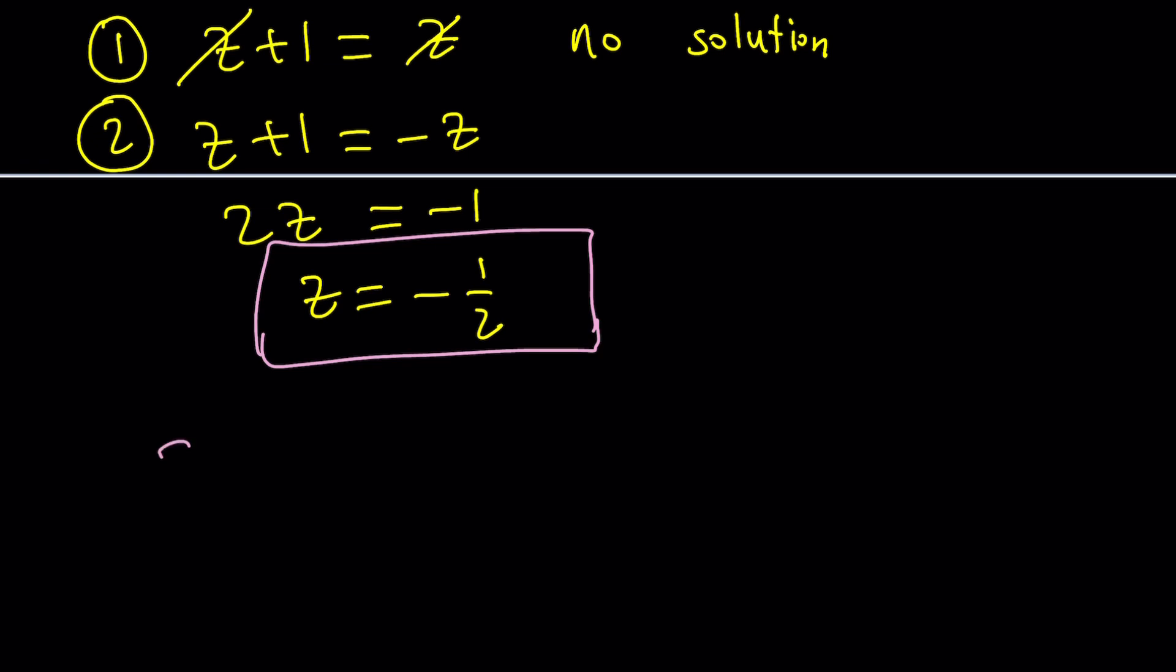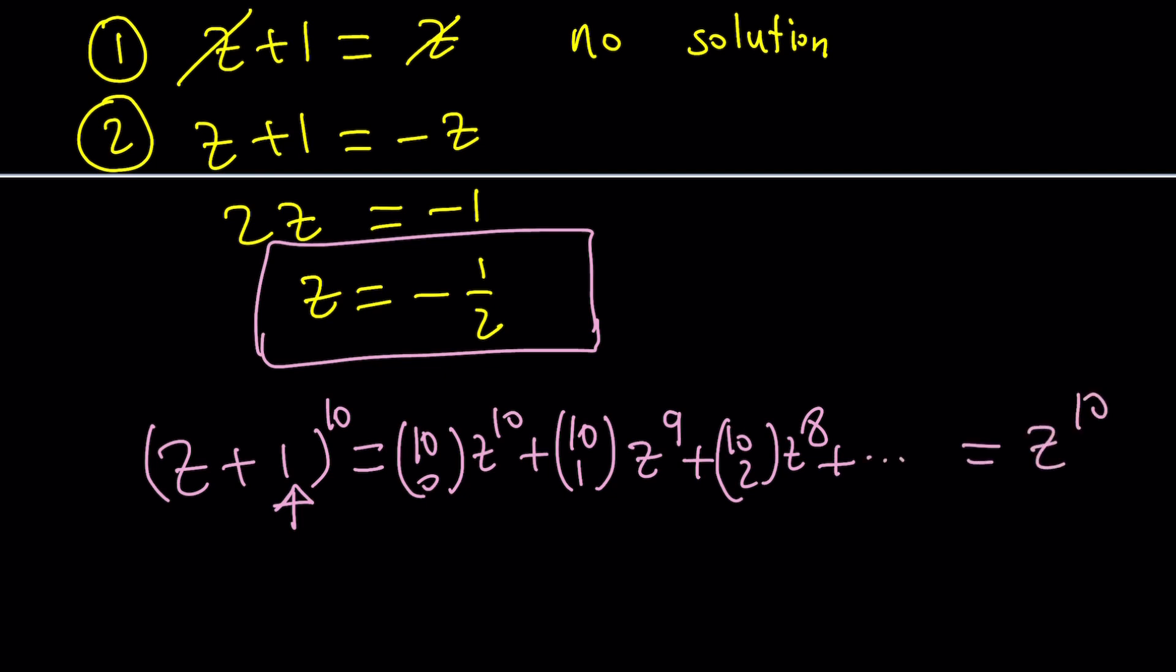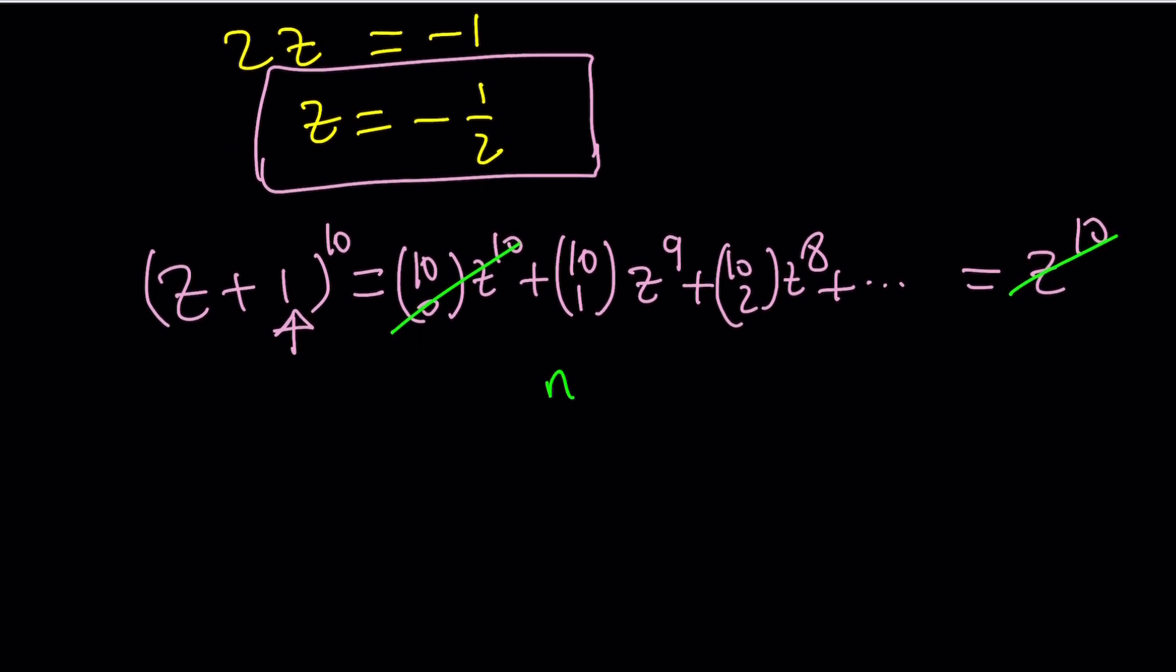So we can go ahead and definitely consider the binomial theorem, which is the combinatorial coefficients are going to come up. So something like 10 choose 0, z to the 10th. 10 choose 0 is 1, by the way. You don't have to write it. Just for completeness sake, maybe. 10 choose 1, z to the 9th. And I don't have to worry about the powers of 1 because they're all 1. And then you get 10 choose 2, z to the 8th, so on and so forth. And when you set this equal to z to the 10th, obviously z to the 10th is going to cancel out, leaving us with a nonic equation.